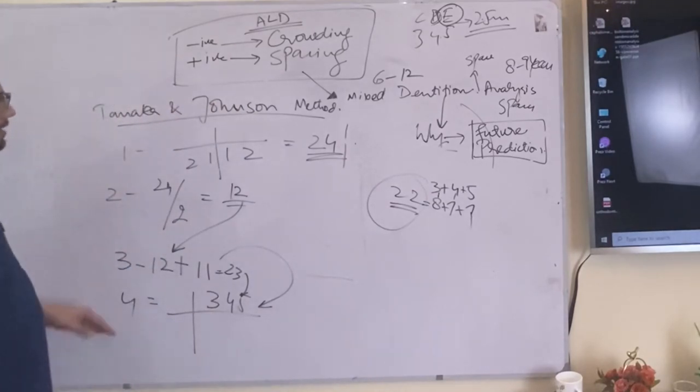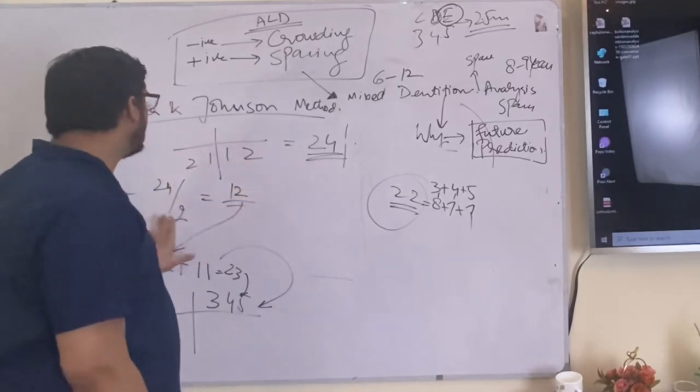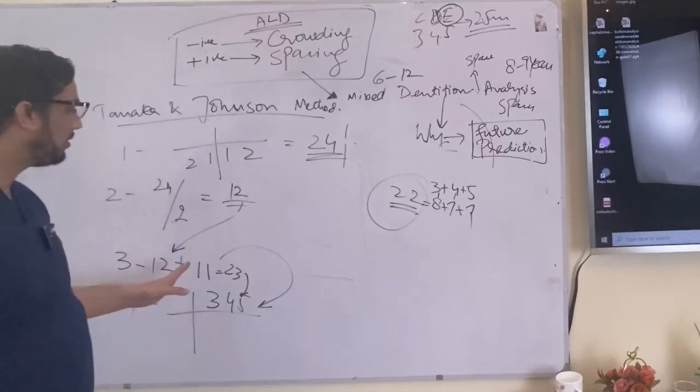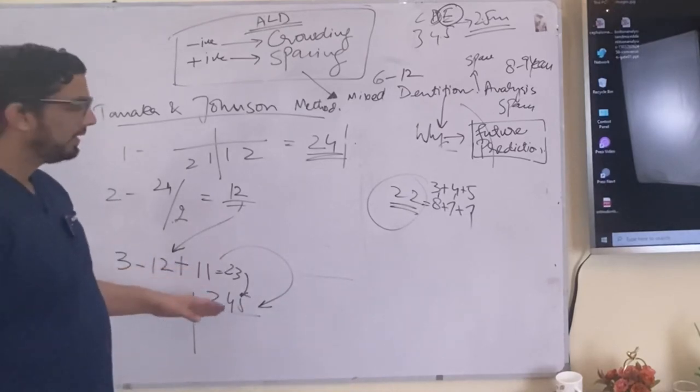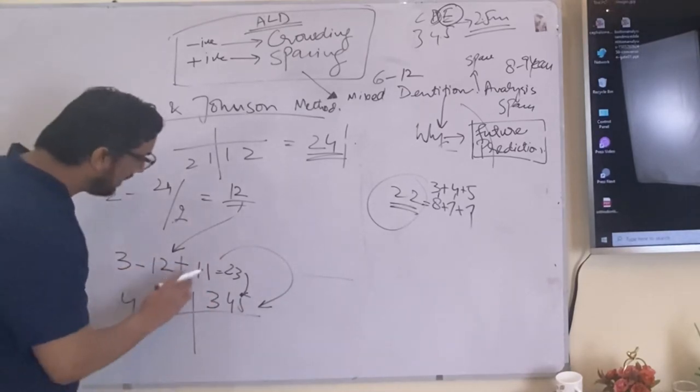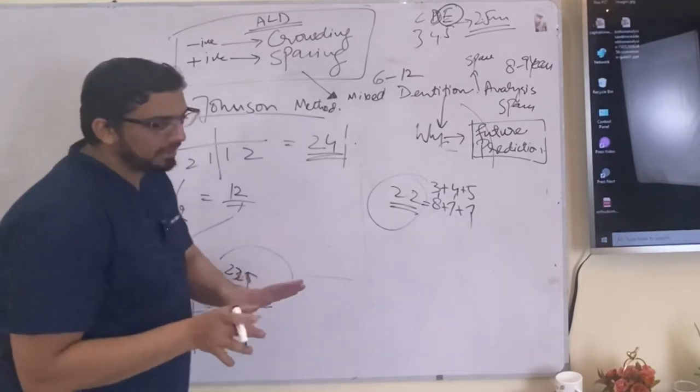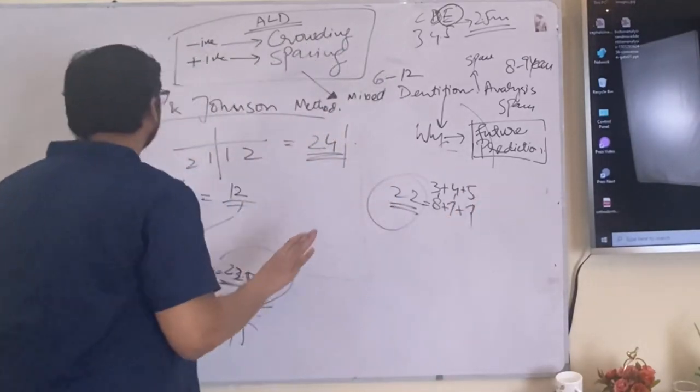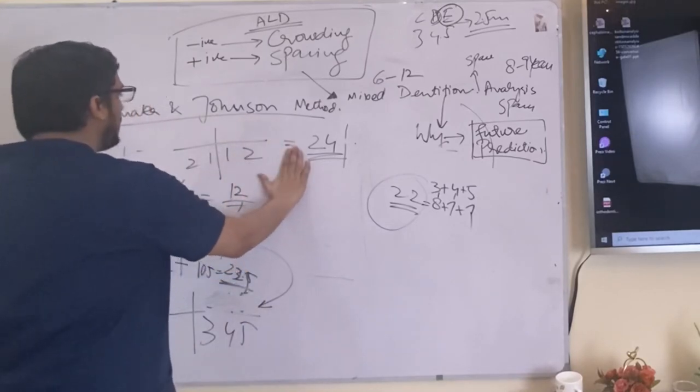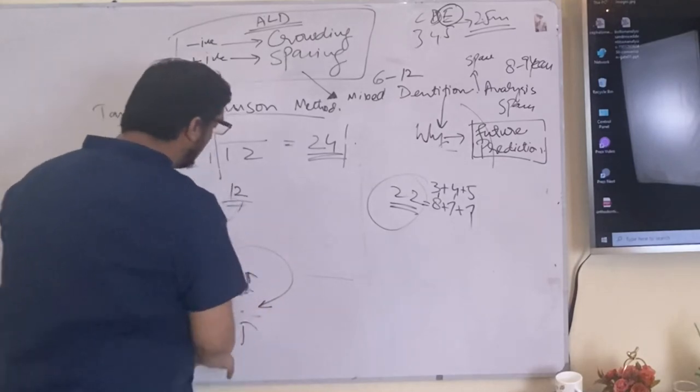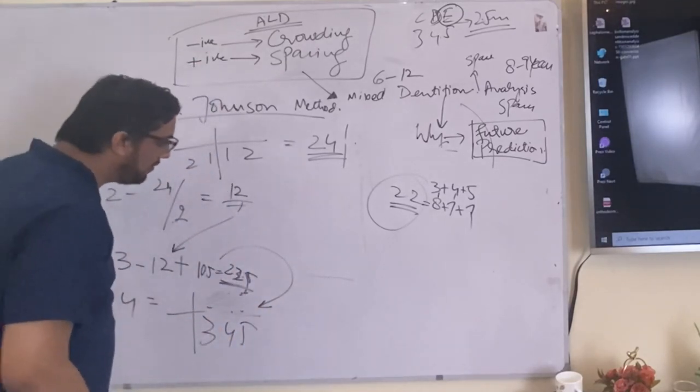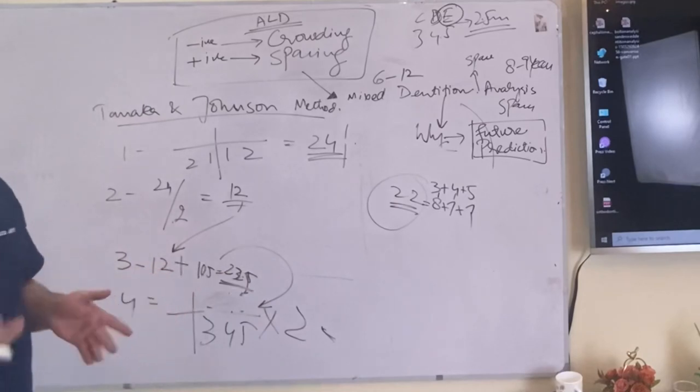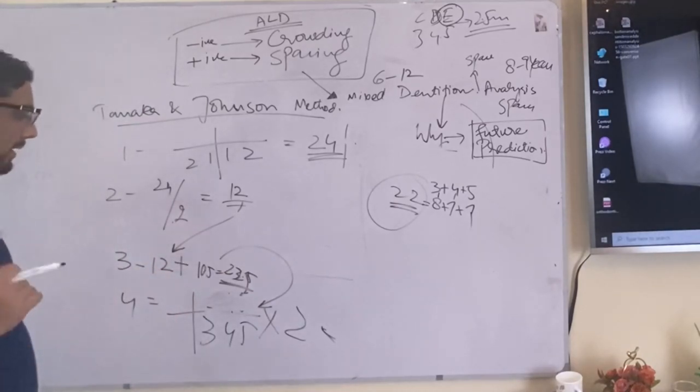So what are the three steps of the Tanaka and Johnson? First of all you will make the mesiodistal width of the lower incisors, then you will divide it by 2, which gives 12, and in the 12 you will be adding the coefficient. If you want to make the mesiodistal width of the upper you will add 11, if you want the mesiodistal width of the lower that would be 10.5. If your answer is around 22 this makes sense, you are proceeding logically. So now quickly revising the three steps: you get the mesiodistal width of the lower incisors, divided by 2, add the coefficient, and this will tell you the half side. Now you want to multiply it by 2. Why you want it to multiply by 2 for the whole arch? Because you want to measure the left and the right side, you want to measure both the sides.